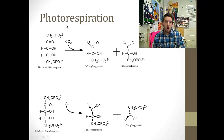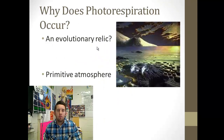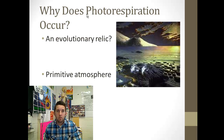Photorespiration is a huge problem for plants. Why is it still around after billions of years of photosynthesis? We think it's an evolutionary relic. Looking at the primitive atmosphere, there wasn't any oxygen. So when photosynthesis first evolved, Rubisco didn't have to worry about reacting with oxygen as a competitor to carbon dioxide — there wasn't any oxygen present. Rubisco could fix carbon dioxide, make two 3PGs, and continue through the C3 Calvin cycle. But once oxygen built up in the atmosphere, photorespiration started occurring and became problematic — especially for C3 plants.